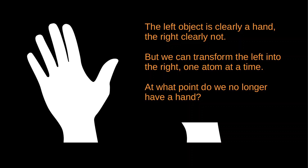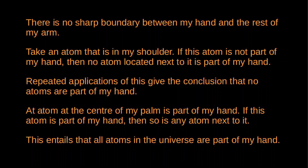A similar argument can be made for boundaries. Consider an atom that is in my shoulder — this atom is not part of my hand. We can run a Sorites argument: if this atom is not part of my hand, then any atom located next to it is also not part of my hand. By repeated applications of this principle, we get the result that no atoms are part of my hand, not even the atoms in the center of my palm. So I have no hands. And the argument can be run the other way: an atom at the center of my palm is clearly part of my hand, but if that atom is part of my hand then any atom next to it is also part of my hand — and by repeated application, every atom in the universe is part of my hand.